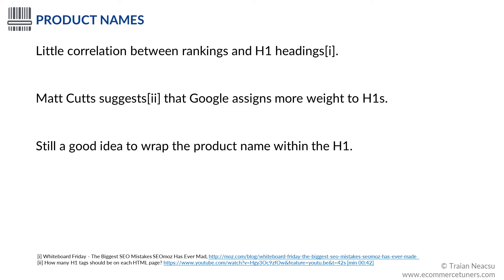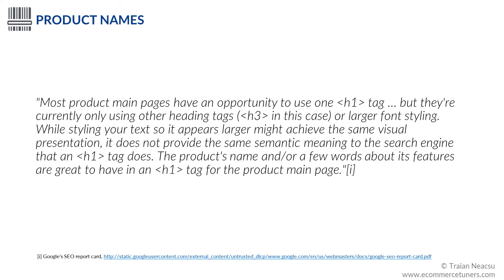Although there seems to be little correlation between rankings and H1 headings, Google suggests that they assign more weight to H1s. It's therefore still a good idea to wrap the product name in an HTML heading element, preferably the H1. This is an excerpt from Google's SEO report card, which aimed to identify potential areas for improvement on Google's product pages. Most product main pages have an opportunity to use one H1 tag, but they're currently only using other heading tags — H3 in this case — or larger font styling. While styling your text so it appears larger might achieve the same visual presentation, it does not provide the same semantic meaning to the search engine that an H1 tag does. The product name and a few words about its features are great to have on an H1 tag for the product main page.